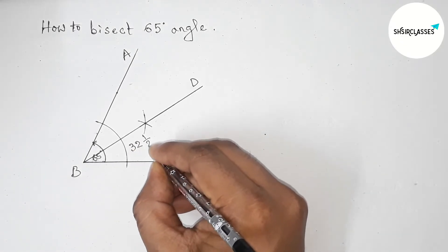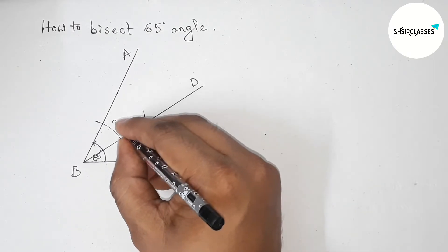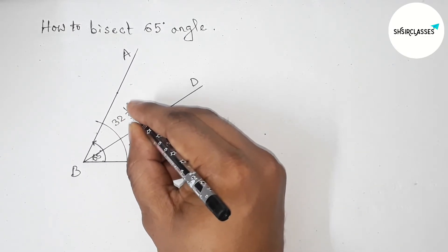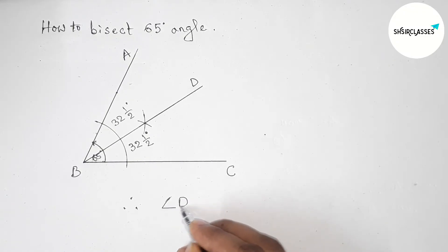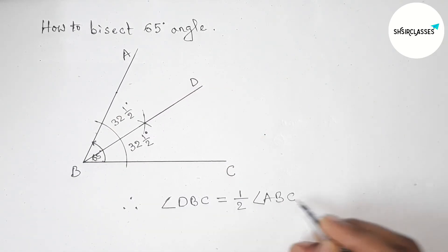This angle is 32 and a half degrees, and this is also 32 and a half degrees. Therefore, angle DBC is half of angle ABC, which equals 32 and a half degrees.